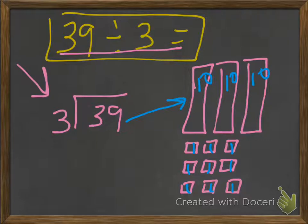So what we want to know is if we have three groups or three rows that we want to put it in, how much is it going to be in each row?